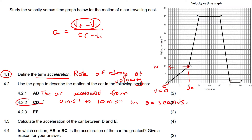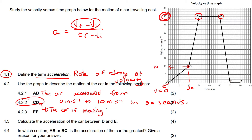The next question says: use the graph to describe the motion between CD. Now, some learners will immediately say the object's not moving — but that's not true. You've got to be careful. If it was a displacement-time graph, then you would be correct, but it's a velocity graph. At point C, the object is moving at 40 meters per second — so it's definitely moving. At point D, it's also 40. That means the object is moving between C and D, but the velocity is not changing. So we can say the car is moving at a constant velocity.